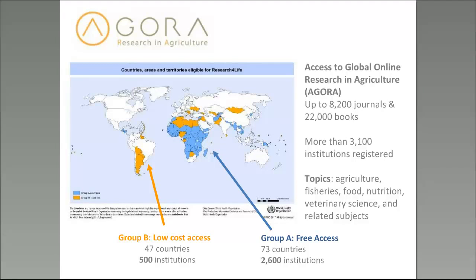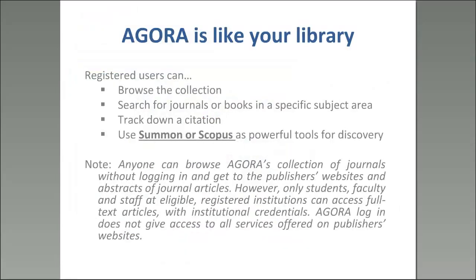Who is eligible? Eligible institutions include national public institutions: government offices, universities, research institutions, NGOs, teaching hospitals, and hospitals. If you're not registered, it's definitely worth checking with your institutional library to see if you are registered. We're happy to see the use increase.